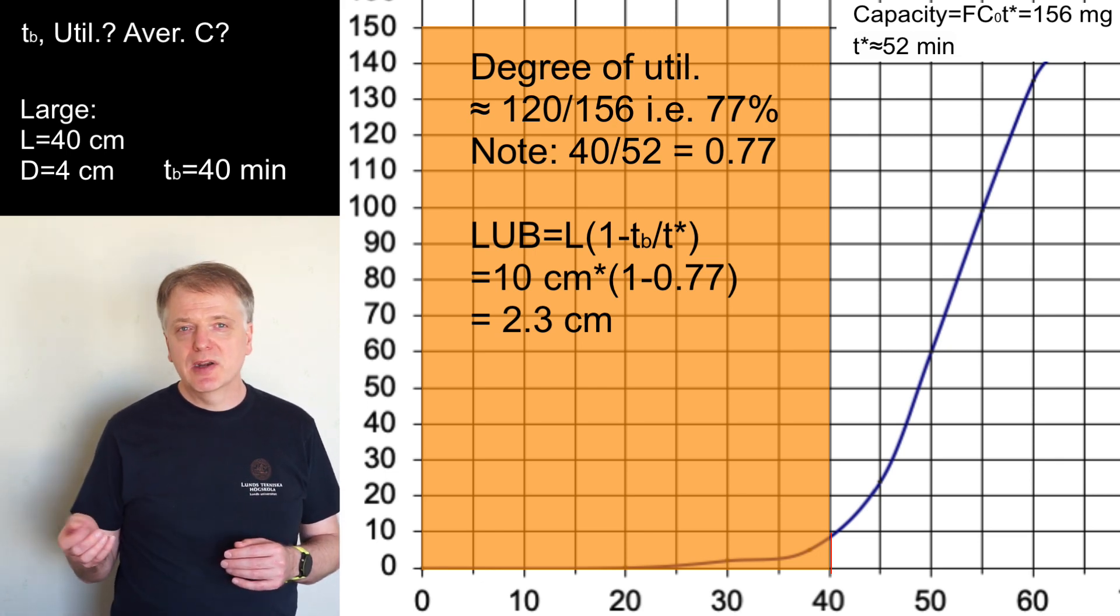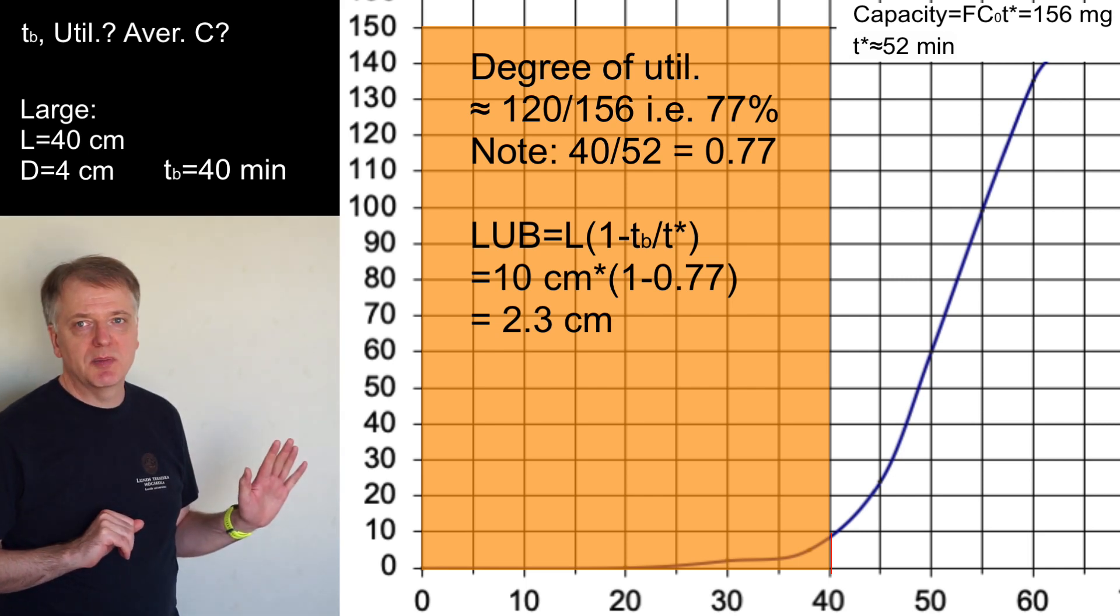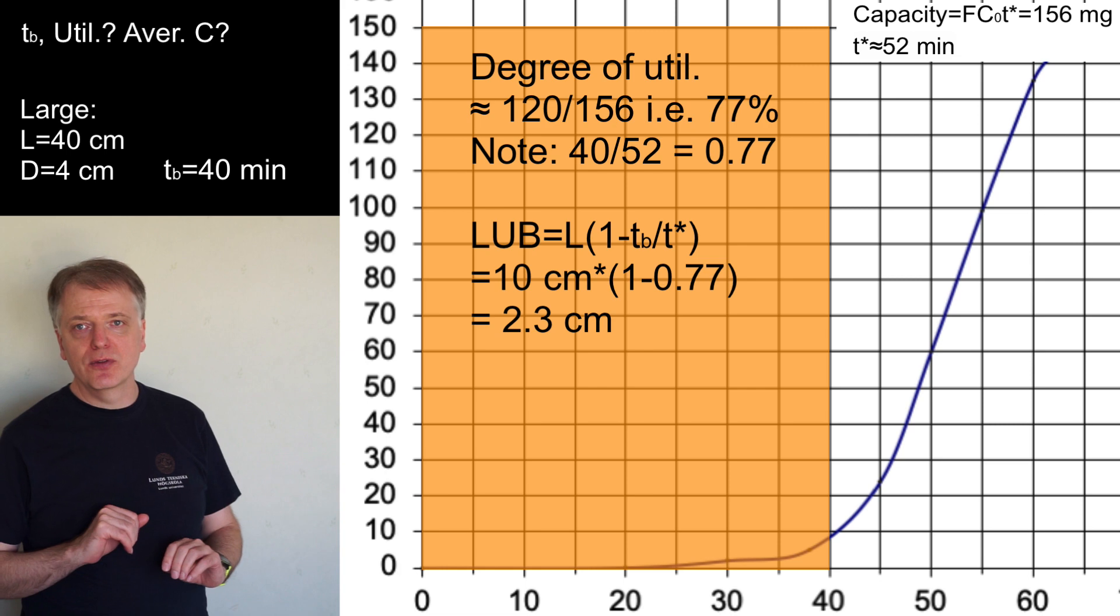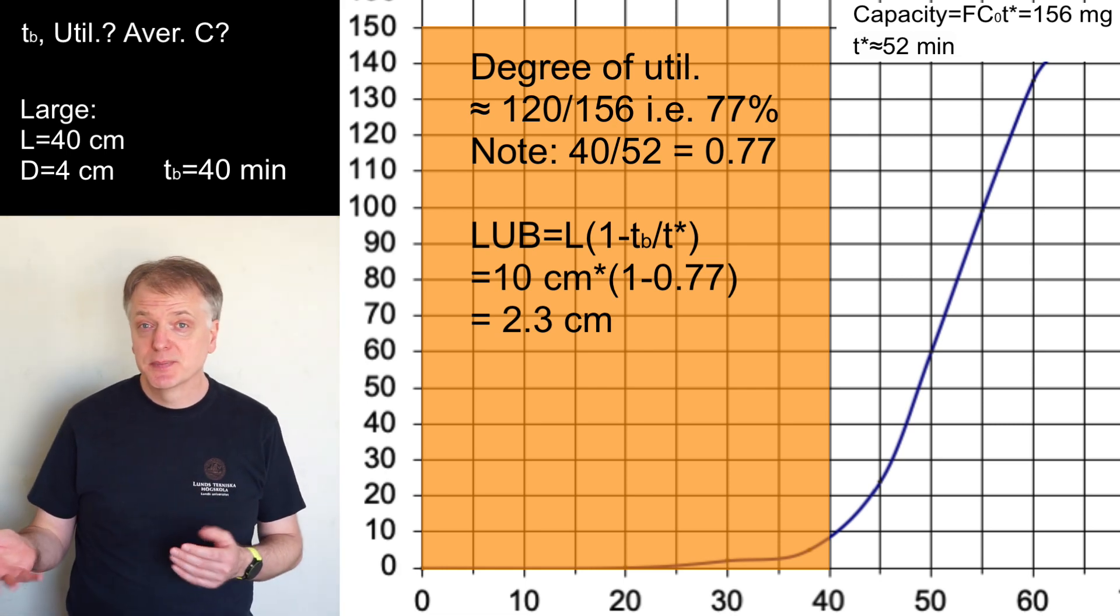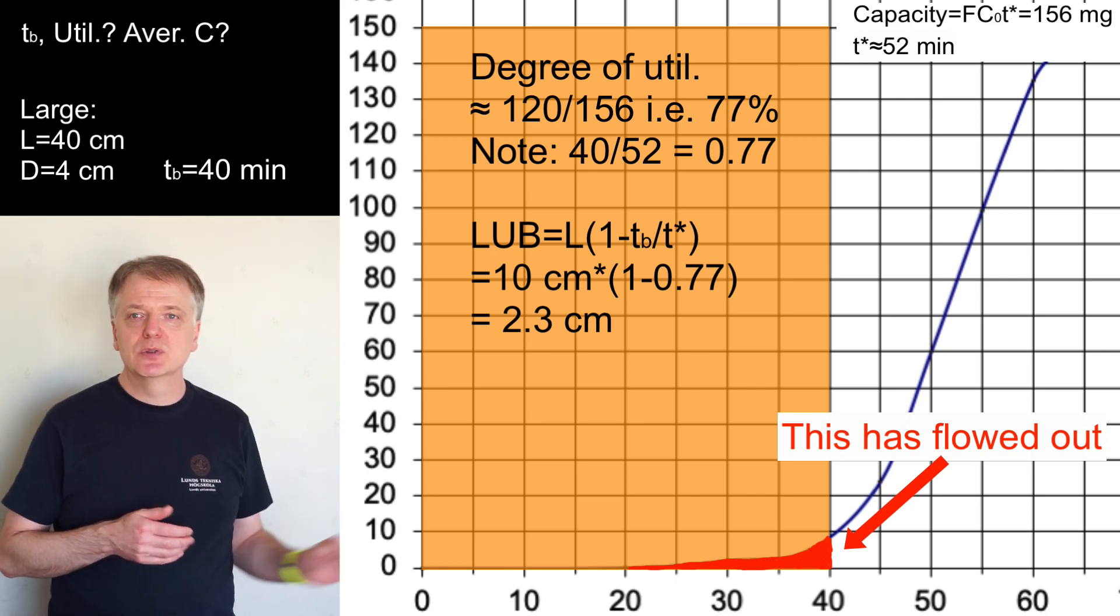The 120 milligram of utilized capacity is a slight overestimation. Some of those 120 milligram has flowed out through the outlet. But how much? The amount in the outlet is given by the area under the breakthrough curve up to TB.